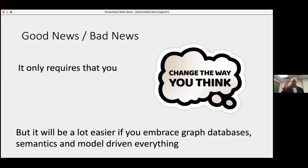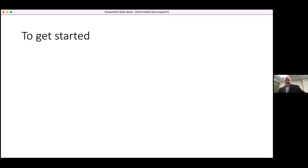Here's some good news and bad news about what I just said. The good news is that it only requires that you change the way you think. Of course, that's the bad news because it's really hard. Embracing graph databases, semantics, model-driven, everything, it is possible to become data-centric without those things. I used to have a questionnaire on the website. You think you're data-centric and you answer all these questions. Of course, everybody got about a 20%, 30% score. One firm got about an 80%. Wow, is that possible? I called them up. I ended up flying out there to meet them. Sure enough, they embraced almost everything we say and had done it the hard way relational databases without semantics. It is possible, but it's very hard. It took them about 20 years.